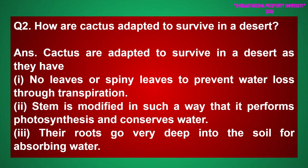Question 2. How are cactus adapted to survive in a desert? Answer. Cactus are adapted to survive in a desert as they have: 1. No leaves or spiny leaves to prevent water loss through transpiration. 2. Stem is modified in such a way that it performs photosynthesis and conserves water. 3. Their roots go very deep into the soil for absorbing water.